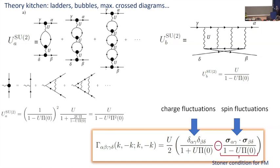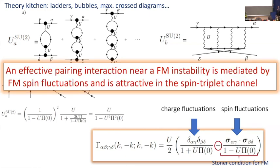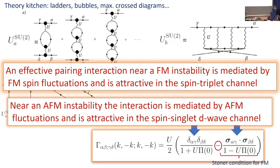You immediately realize that (1 minus u·Π) is nothing but the Stoner criterion for ferromagnetism, and there is a minus sign — this is the classic story of how you get attraction due to ferromagnetic fluctuations. The result is exact if you only take the polarization bubble with zero momentum transfer. Near a ferromagnetic instability, you get effective attraction in a channel mediated by spin fluctuations, and this channel is spin triplet. You can do the same with antiferromagnetic fluctuations and get attraction in the d-wave channel mediated by antiferromagnetic fluctuations — that would be spin singlet.